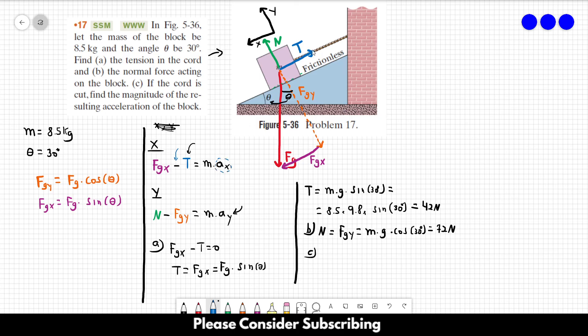Because when we cut this chord over here, the block will start going downwards. However, when we do that, T is zero.